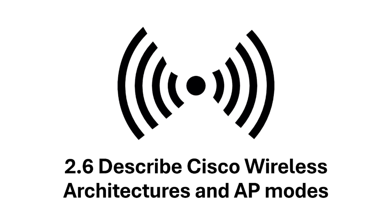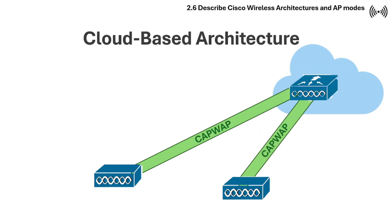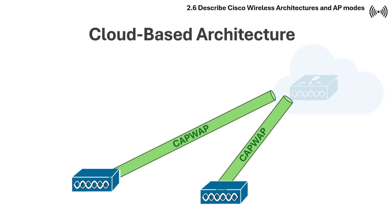This is part 2 of CCNA 2.6 Cisco Wireless Architectures and AP Modes. The third wireless design is the cloud-based architecture.